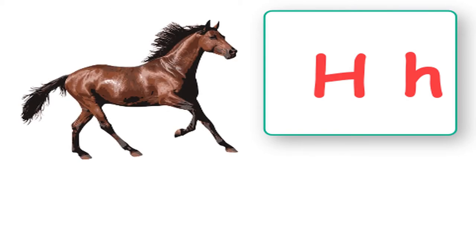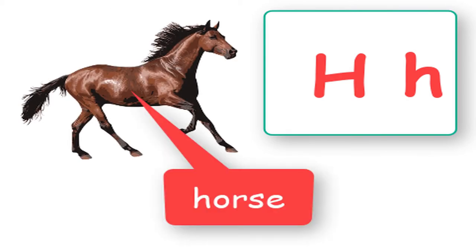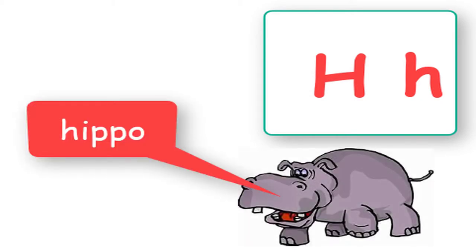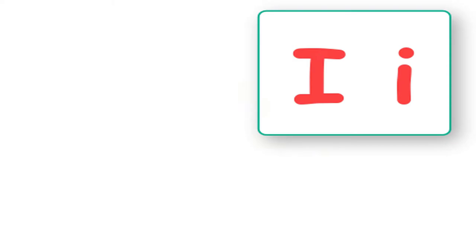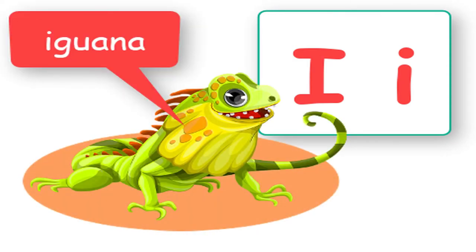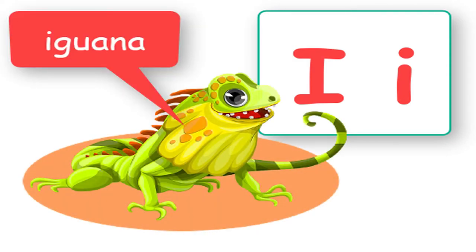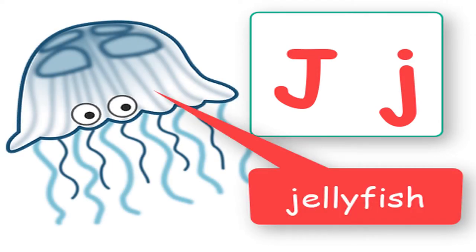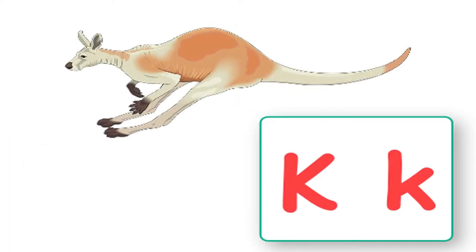H says horse, horse. H says hippo, hippo. I says iguana, iguana. J says jellyfish, jellyfish. K says kangaroo, kangaroo.